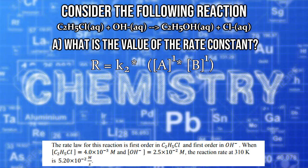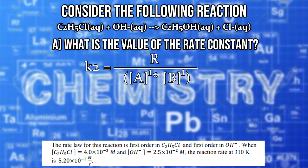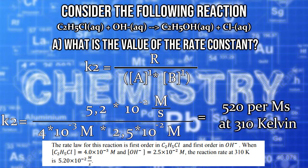Now that we have the formula, we need to solve the equation for K2 because the task wants us to find it out. Last but not least, we are filling all the numbers in the formula and get 520 per mole seconds at 310 Kelvin. This is the rate constant.